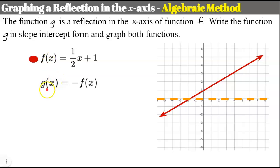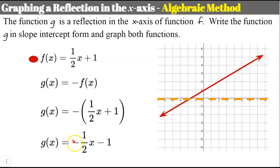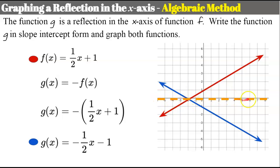I'm going to replace f of x with its value, so g equals negative times the function, which is 1/2x plus 1. Distributing negative one to each term gives g equals negative 1/2x minus 1. Graphing this: y-intercept of negative 1, rise 1, run negative 2 — and there is function g. You can see visually that the points are reflected over the x-axis.